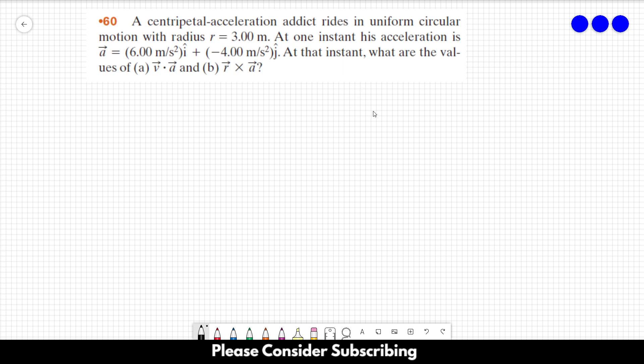his acceleration is vector A equals 6 meters per square second in the i direction minus 4 meters per square second in the j direction. At that instant, what are the values of V dot product with A and R cross product with A?